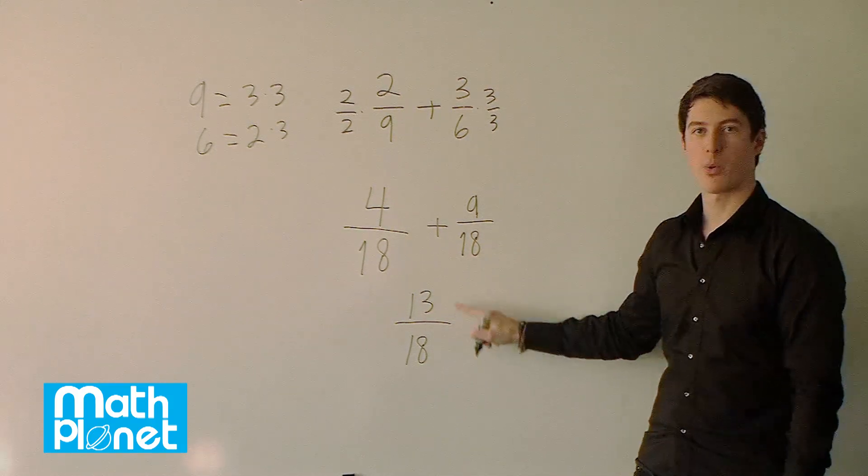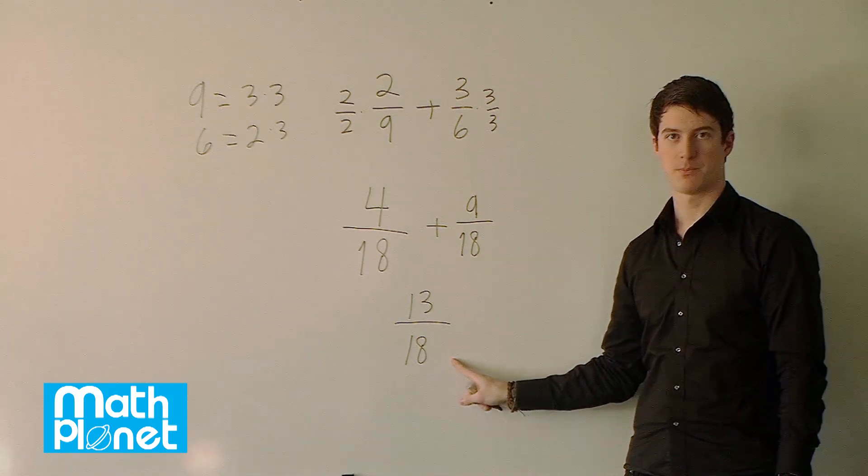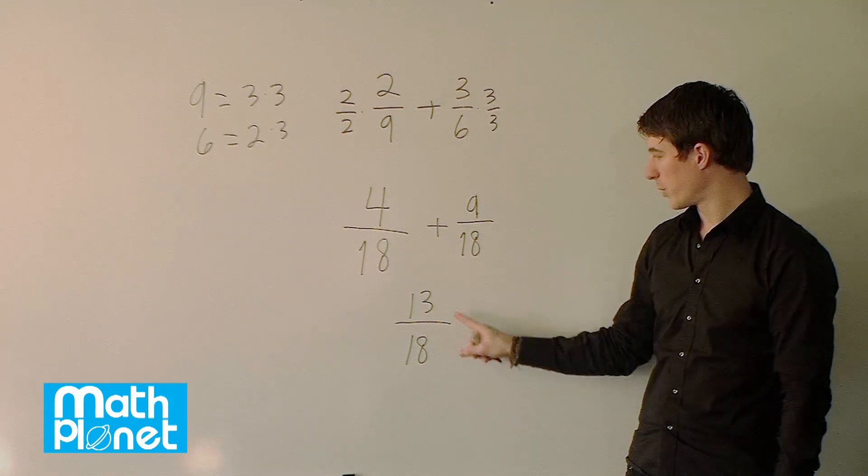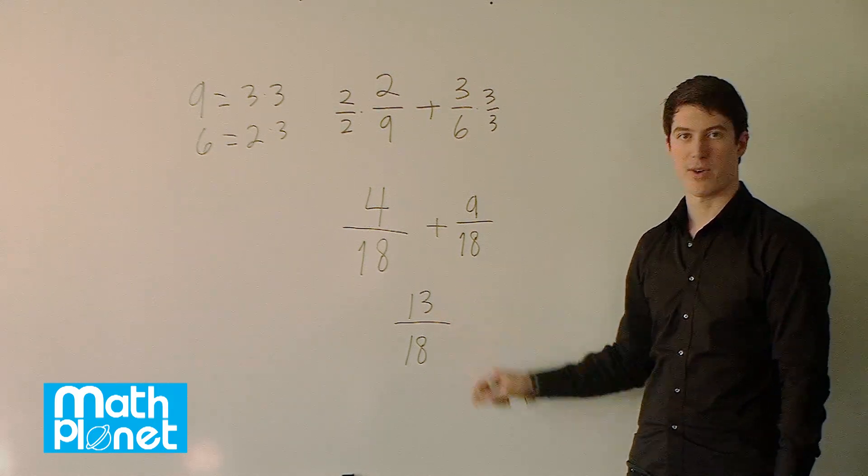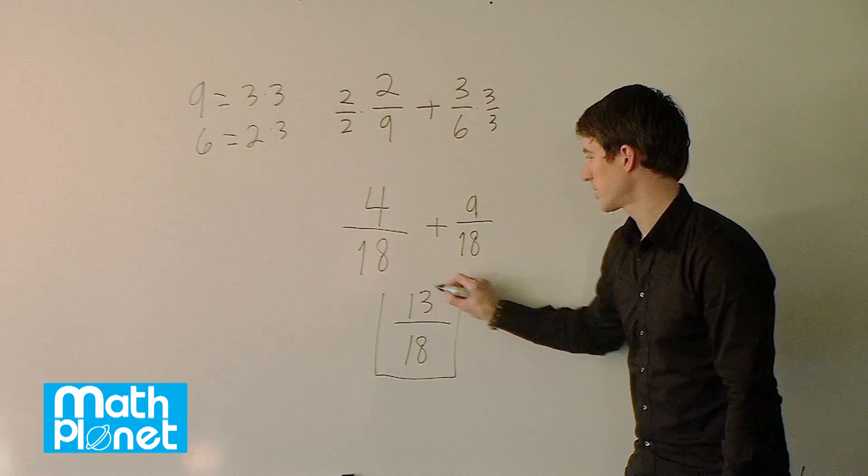At this point we stop and think about whether or not we can reduce it any further. We've combined the fraction to a single term but we want to see can we reduce this any further. We can't reduce this any further. There are no common factors between the 13 and the 18. So we're done. The answer is just 13 over 18.